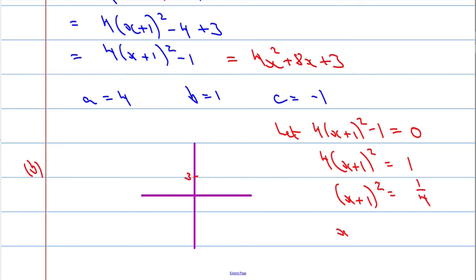So you get x plus 1 to be squared is going to equal 1 over 4. Take the square root of both sides. x plus 1 is going to equal plus or minus 1 over 2. Square root of 1 is 1. Square root of 4 is 2, which means that x must be equal to negative 1 plus or minus 1 half.